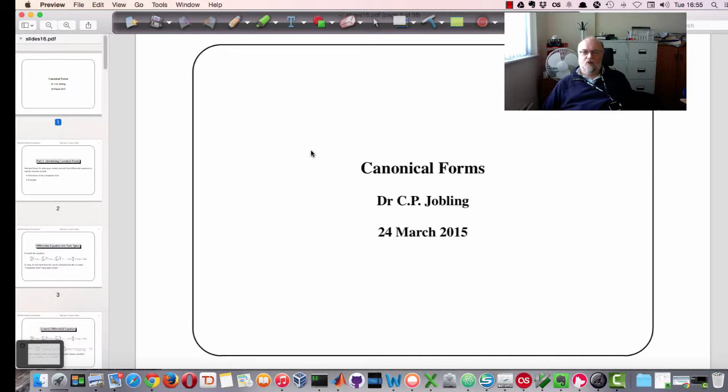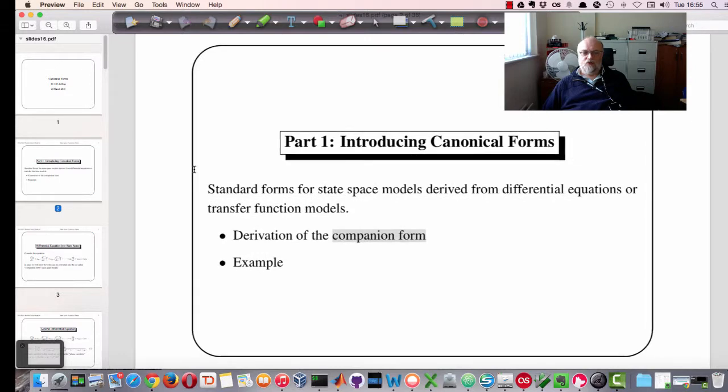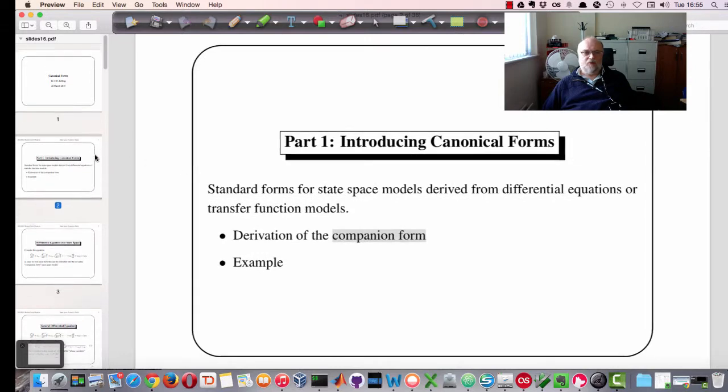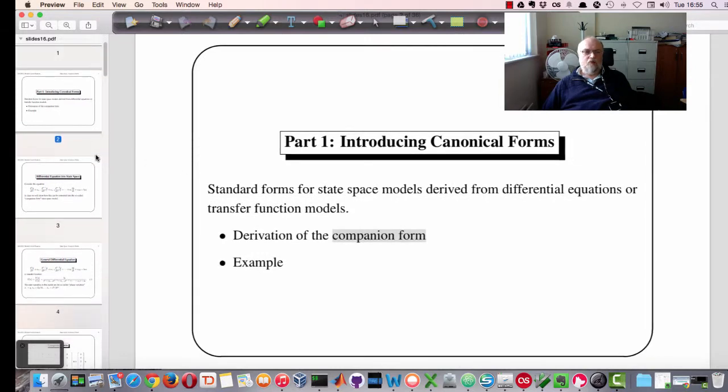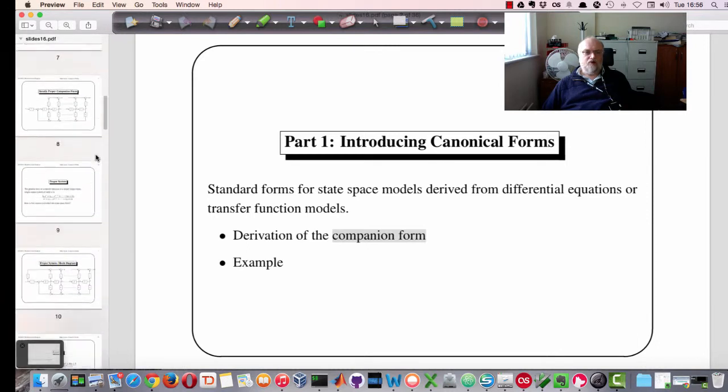Here's Canonical Forms. This is what we covered last time. We talked about the companion form and gave some examples of its use for systems with no derivatives in the numerator and for strictly proper systems.